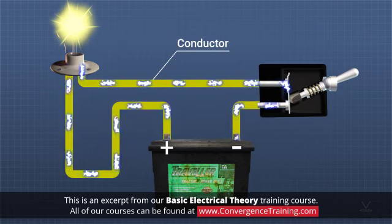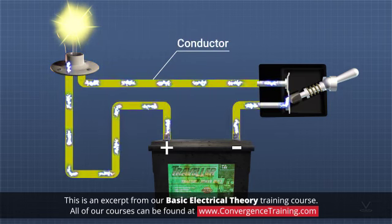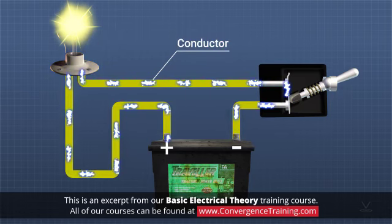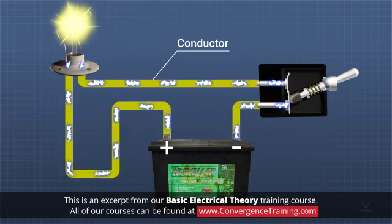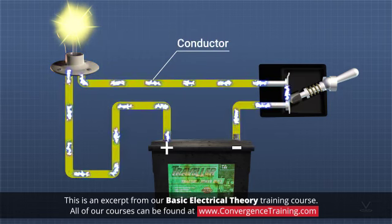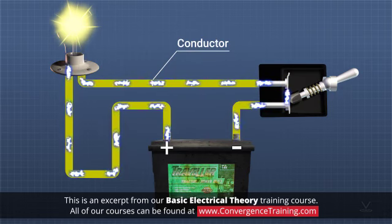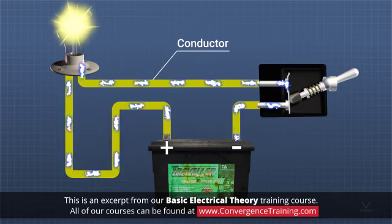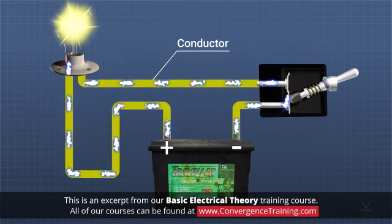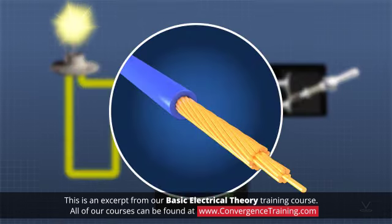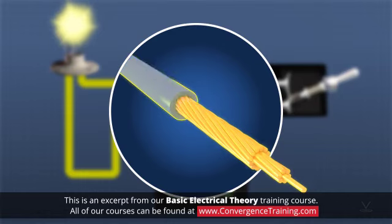Three, a conductor is a material used to connect all the other elements of a circuit, and allows the easy flow of electricity. The most common type of conductor is a copper wire covered with an insulating material.